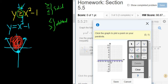Then it says, click the graph to plot a point on your parabola. So we need a point. To find a point, you can just plug in any number you want. I'll plug in 1.